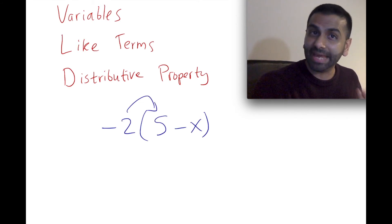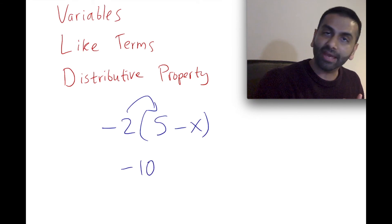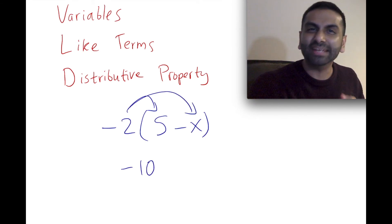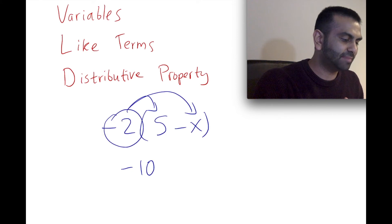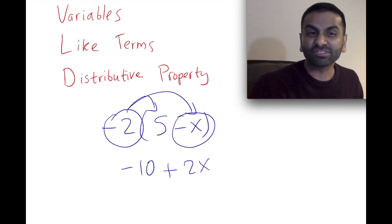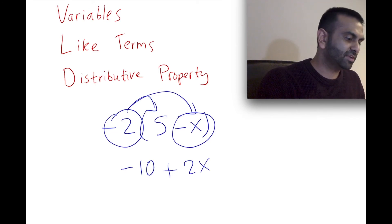But then the -2 times the -X: negative times negative is positive, that's going to be plus, and then 2 times X is 2X. So that would just simplify to -10 + 2X.